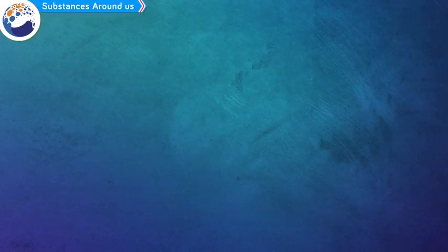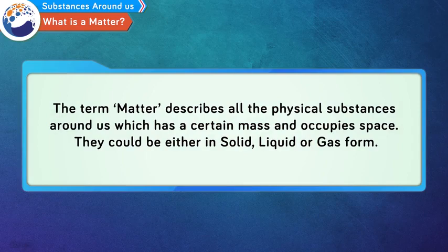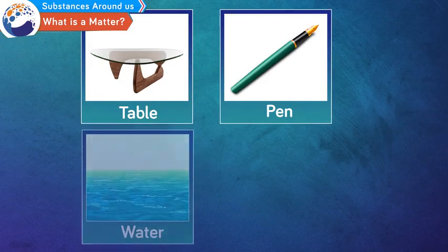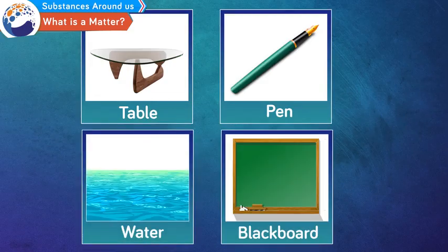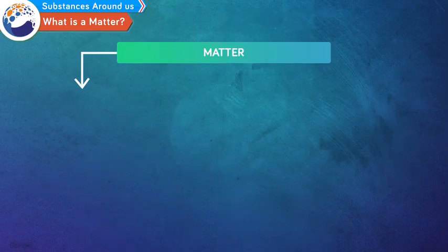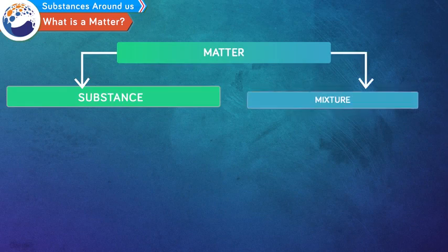Substances around us. Everything physical that we see around us is made up of matter. The term matter describes all the physical substances around us which has a certain mass and occupy space. They could be either in solid, liquid or gas form. For example, table, pen, water, blackboard, etc. Every matter is subdivided as a substance and mixture.